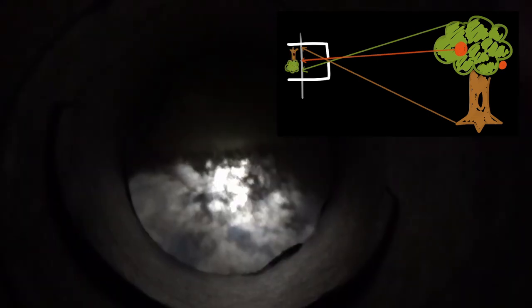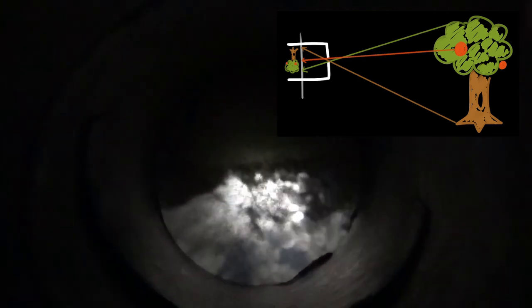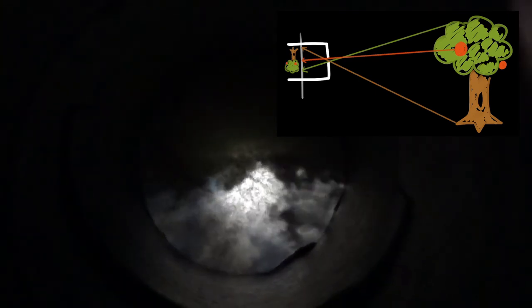And this is what our eyes and the camera are doing all the time. They are seeing an upside down and back to front image, and our brains or the computer are flipping it around so that it's the right way around. And I think that's pretty cool.